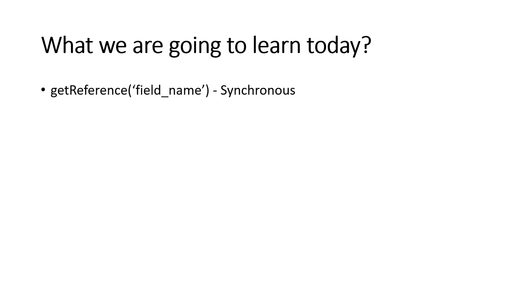That method is getReference. This is the same getReference method I mentioned while explaining GlideForm, because it comes from the GlideForm API used on the client side. This is the method by which we can directly access a reference field value from the client. We'll see the different ways you can use it, its drawbacks, and with a use case I'll show you how to practically implement it in a ServiceNow PDI.